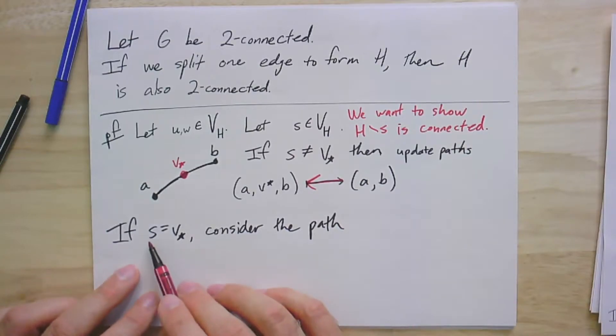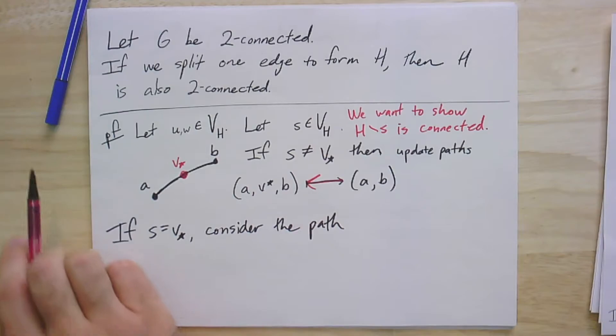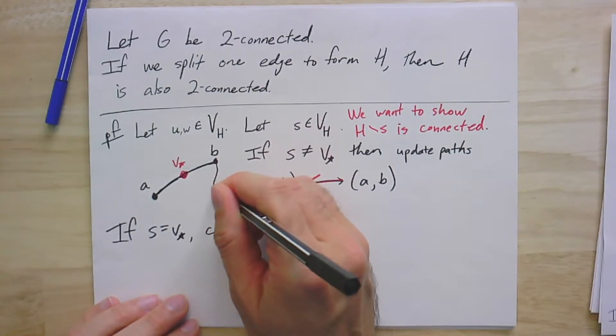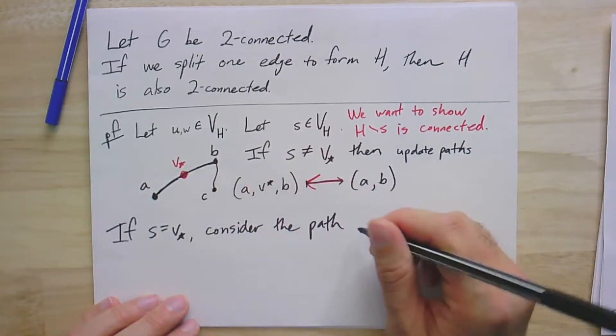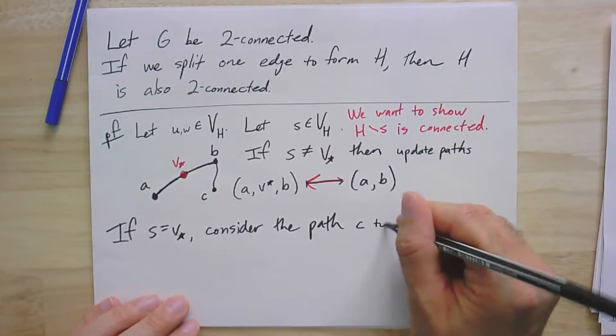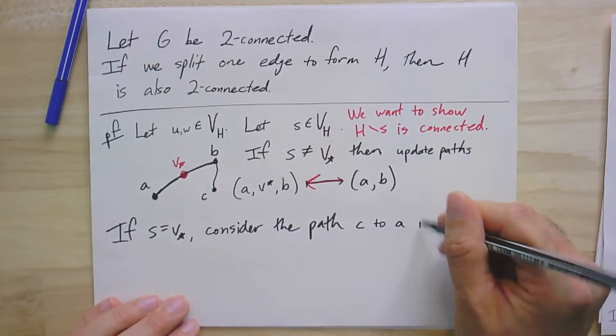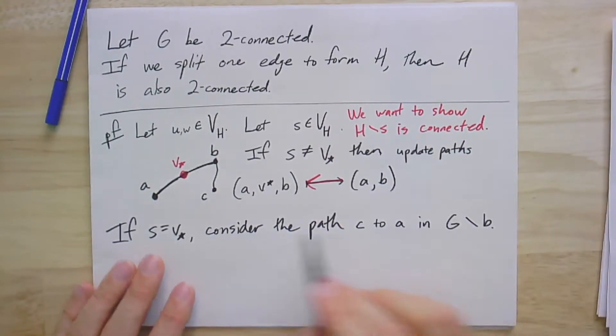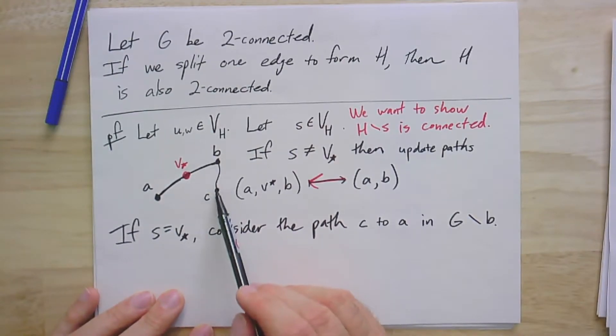If, on the other hand, the vertex we removed was exactly this one vertex, then we can consider a particular path from a vertex. Let's just pick one, take a vertex here, let's call it C. And it's the path from C to A in the graph G minus B. So, let's be careful on why this actually exists.